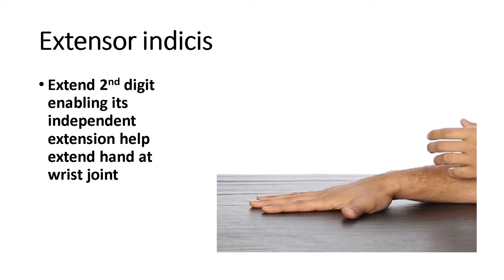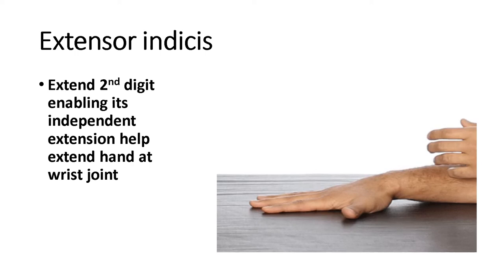The action of extensor indicis is that it extends the second digit, enabling its independent extension, and also helps extend the hand at the wrist joint.